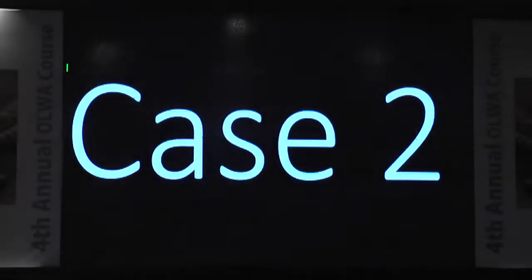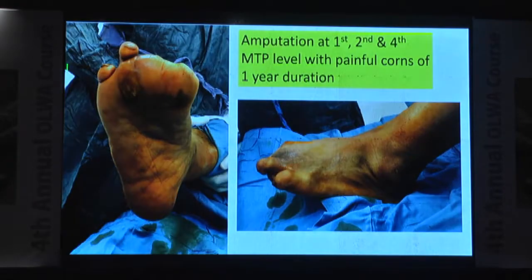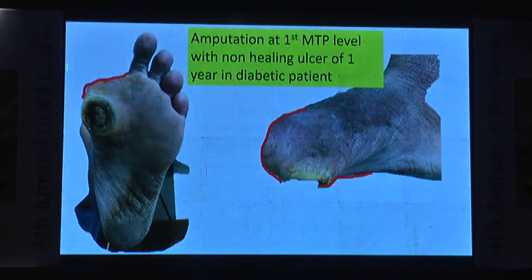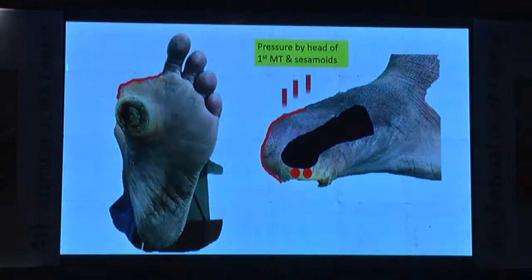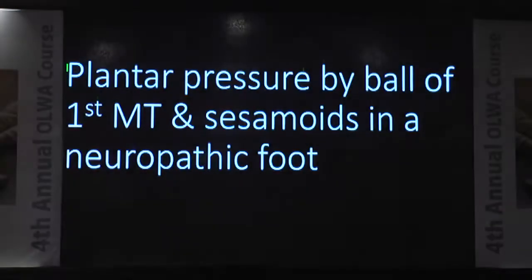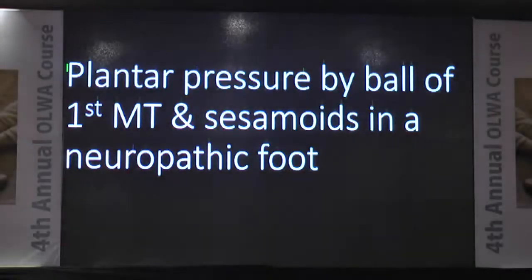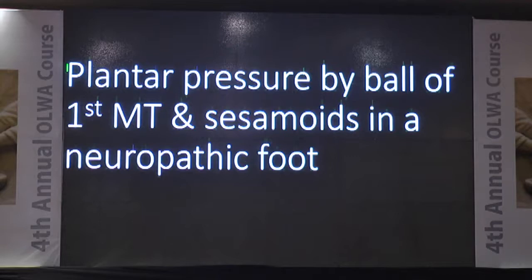Case 2. Amputation at first, second, and fourth MTP level with painful corns of one year duration. Amputation at first MTP level with non-healing ulcer of one year duration in a diabetic patient. The cause was pressure by the head of the first metatarsal and sesamoids — plantar pressure in a neuropathic foot which was not healing.